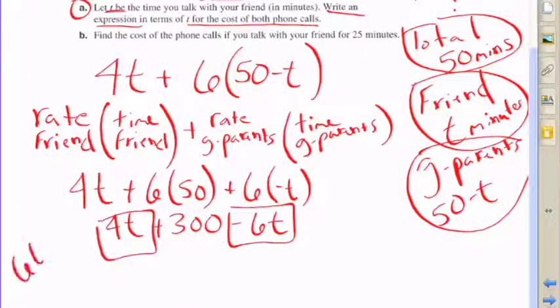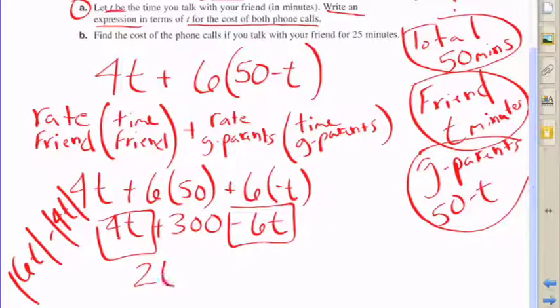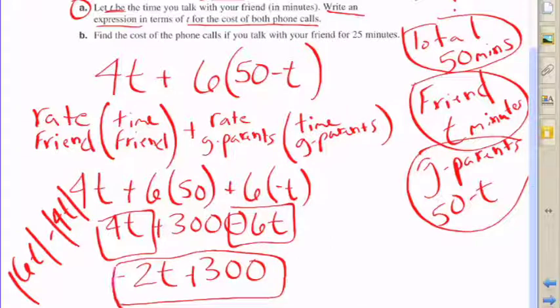So carry out a little bit of mathematics. Bring down that 4t. Six times 50 is 300, and six times negative t, that is negative 6t. So notice that I've identified like terms, 4t and negative 6t, and I use the properties of absolute value. 6t minus 4t is 2t, keep the sign from the larger absolute value, and that's negative, so it's negative 2t plus 300.